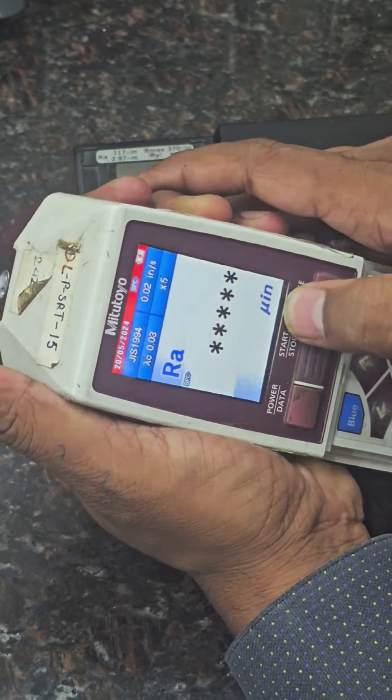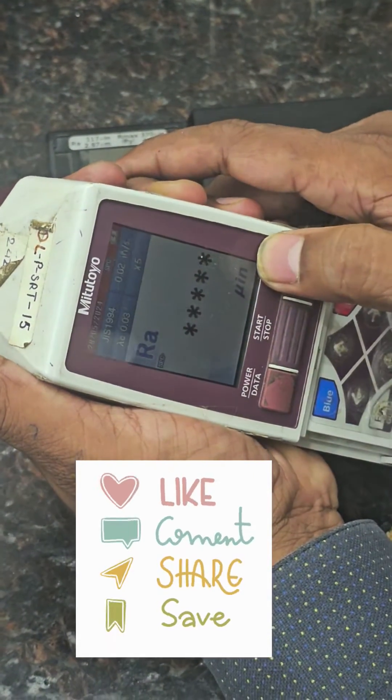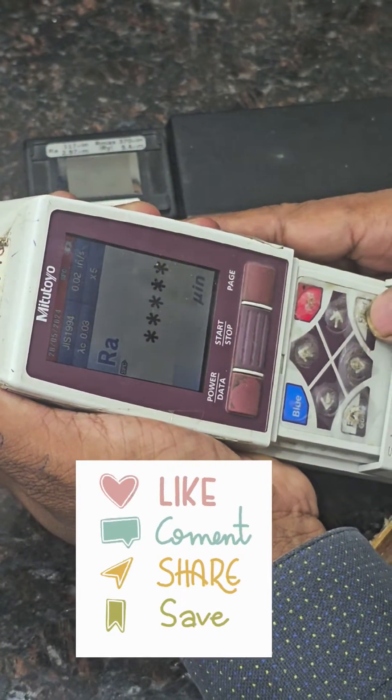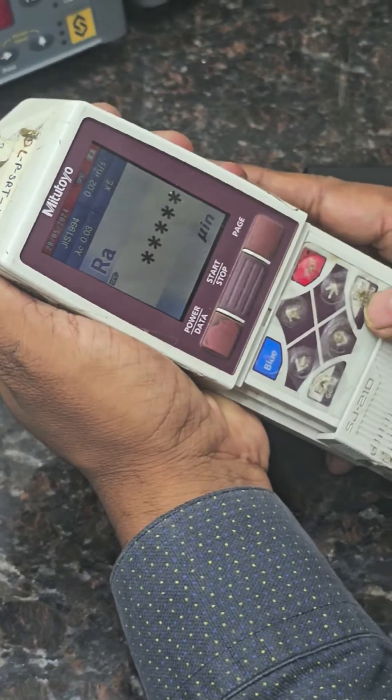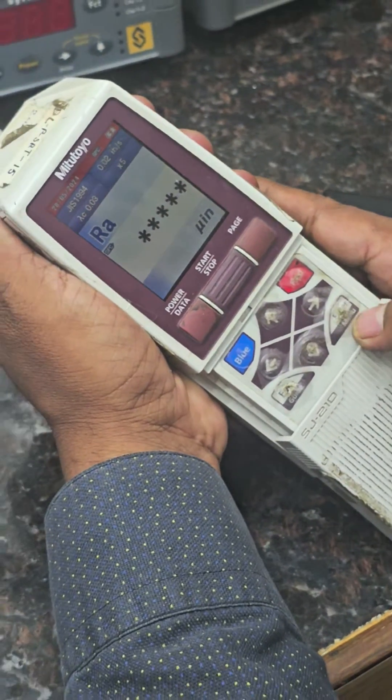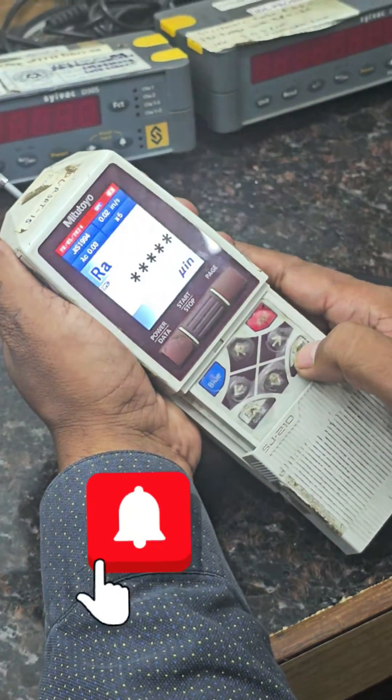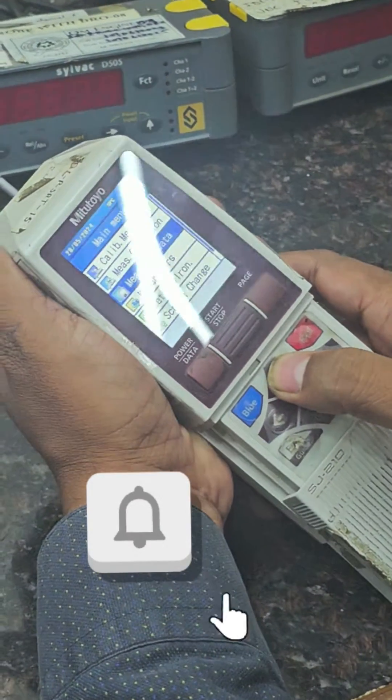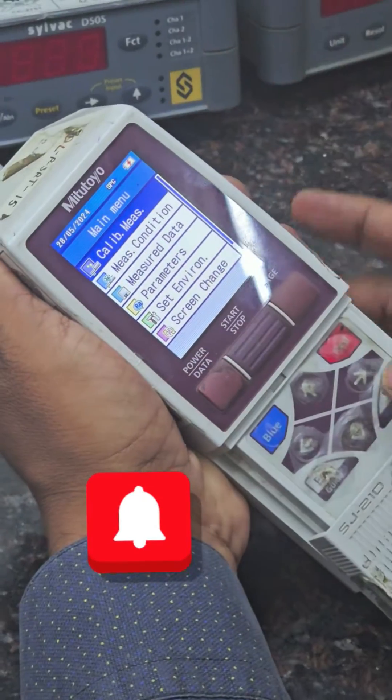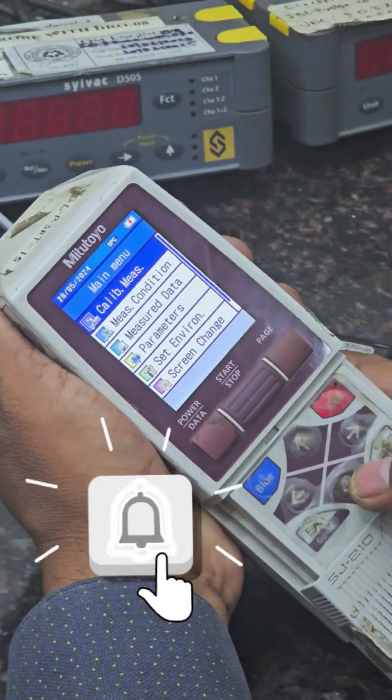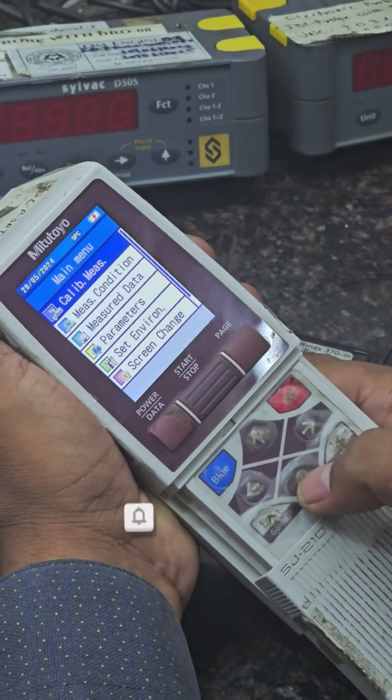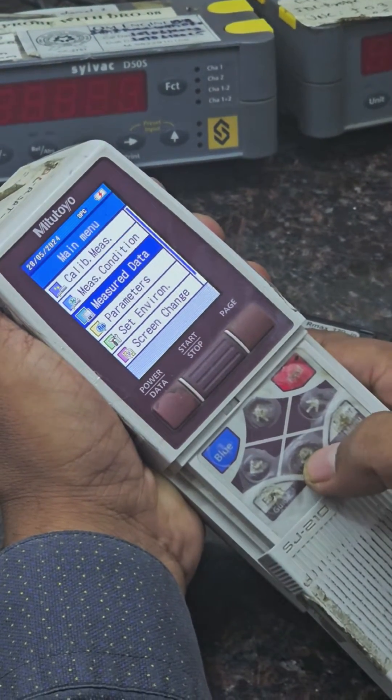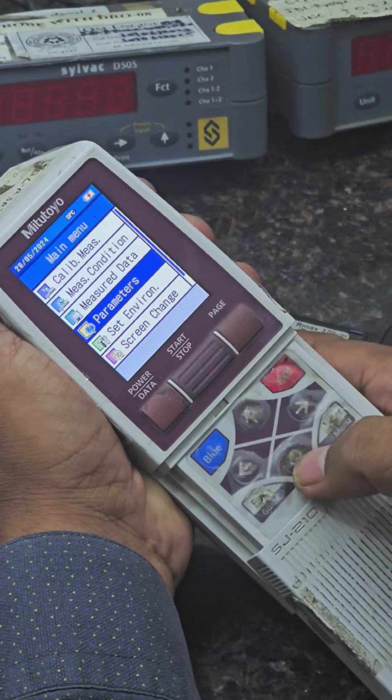The unit is in micro inches. We can change the unit this way: press the menu button one time. The first menu is cali.meac measurement, then measurement condition, third is measurement data, fourth is parameter, fifth is set environment.